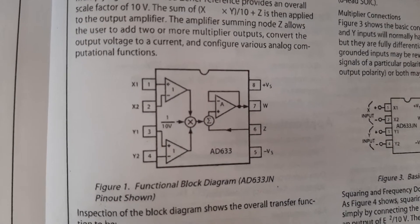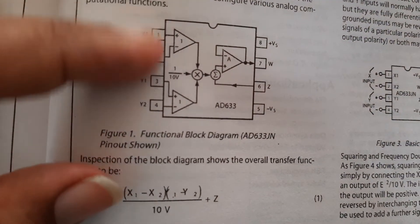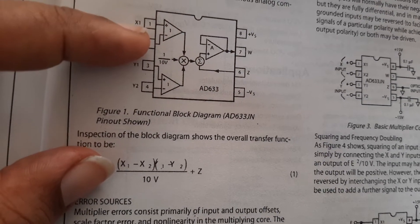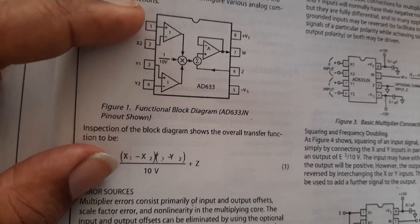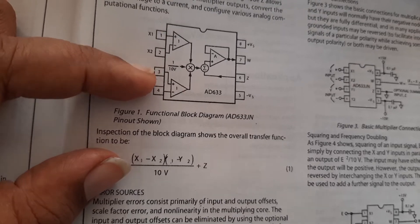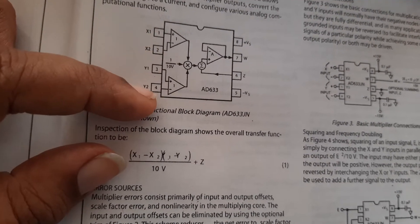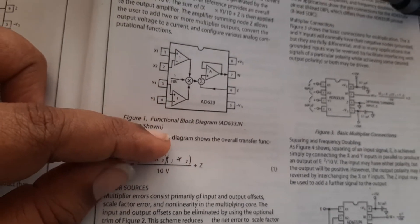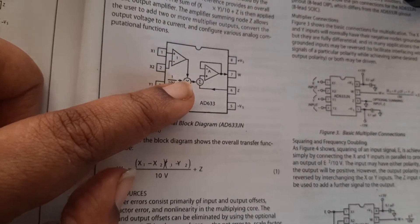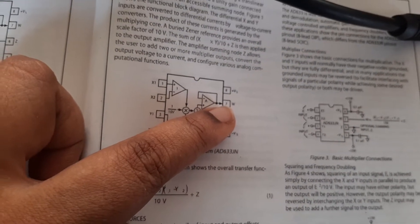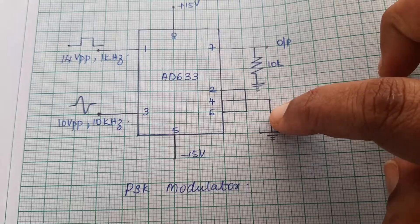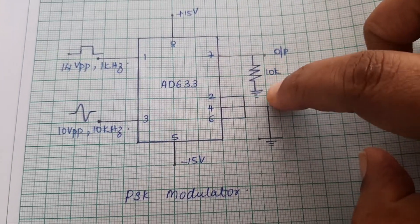This is the internal diagram of AD633. You can see it is an 8-pin IC. Between pins 1 and 2 we give one input, and between pins 3 and 4 we give another input. Pin 1 receives the square wave input and pin 3 receives the sine wave input. Pins 2 and 4 are negative pins so we ground them. Both inputs are multiplied by the internal multiplier and output is taken at pin 7. Pins 2, 4, and 6 are grounded, and at pin 7 we take output across a 10k resistor.